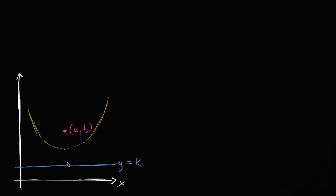What I want to do in this video — it's going to get a little bit of hairy algebra — but given that definition, and given a focus at the point x equals a, y equals b, and a directrix at y equals k, I want to figure out what the equation of that parabola is actually going to be, in terms of a's, b's, and k's.